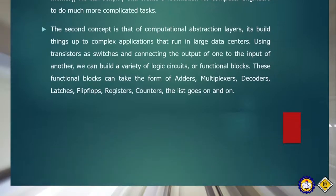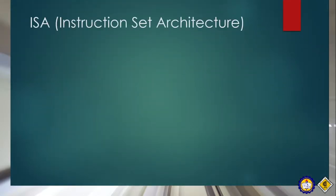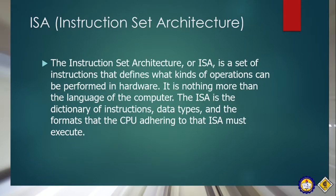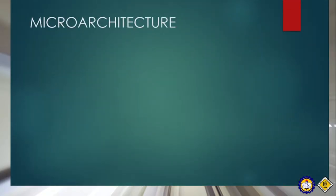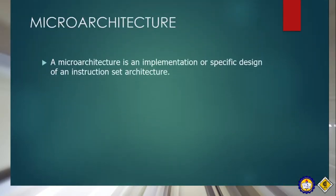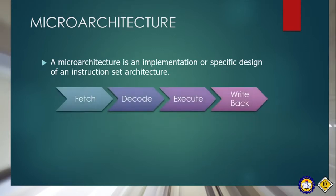Next, we will talk about ISA, or the Instruction Set Architecture. ISA is a set of instructions that defines what kind of operations can be performed in the hardware — it is nothing more than the language of the computer. The ISA is the dictionary of instructions, data types, and formats that the CPU adhering to that ISA must execute. Next is the microarchitecture — the implementation or specific design of an instruction set architecture. ISA is the software and the microarchitecture is the hardware.